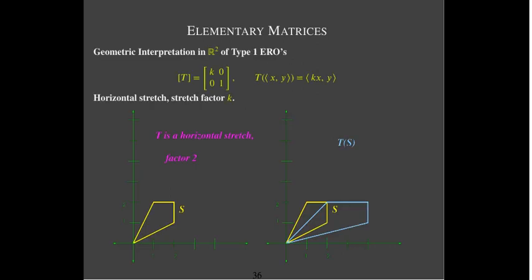Now let's look at the geometric interpretation of all the elementary row operations on R2. With R2 you're dealing with two-by-two matrices starting from the two-by-two identity. There are five possibilities: two for type 1 (scale first row or scale second row), one for type 2, and two for type 3.